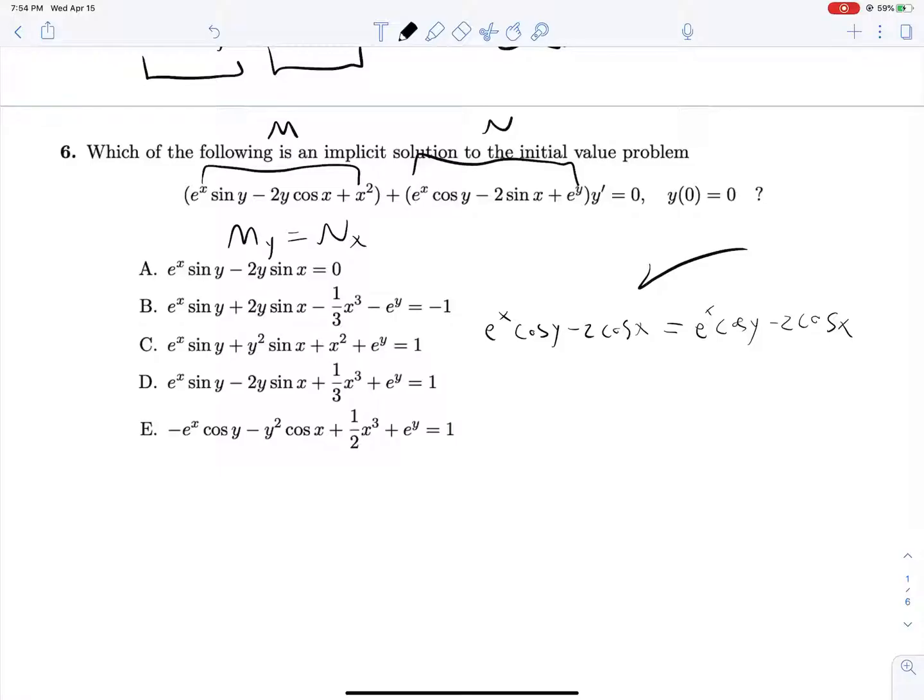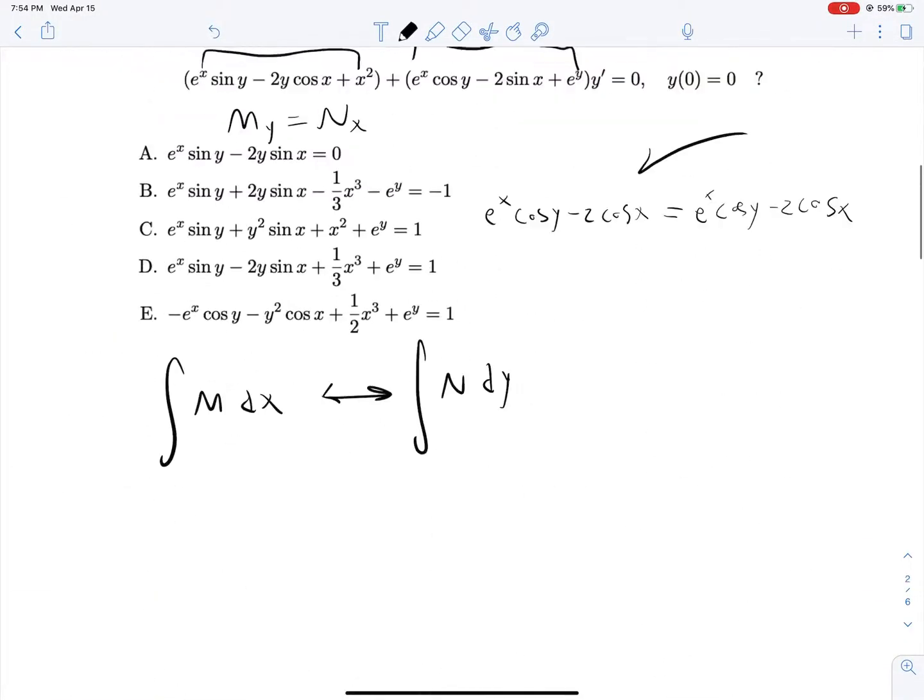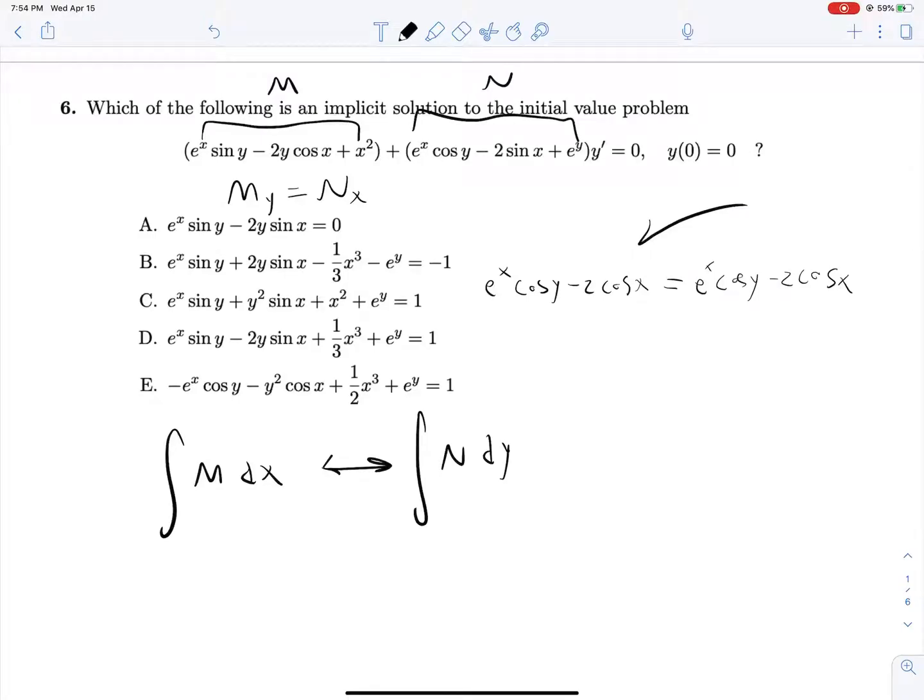And so as a result, we can find the integral of M dx and compare it with the integral of N dy. Let's make sure that that was, yeah, that is what we were doing up here. So M dx will give us e^x sin y plus 2y sin x plus x cubed over 3. And then N dy, here's our little comparison, will give us e^x sin y. Oh, I'm apparently pretty bad at these integrals. That should be a negative, the integral of negative cosine is negative sine. There's my problem. So this will give us negative 2y sin x and e^y.